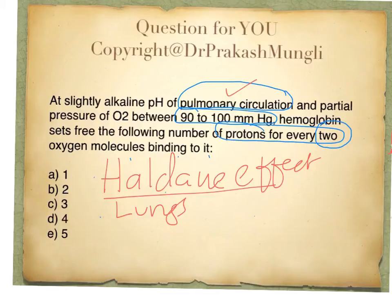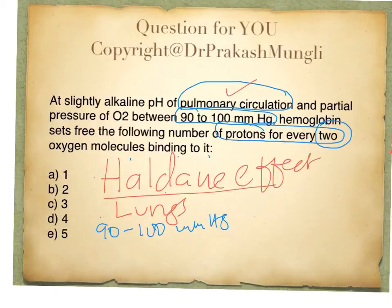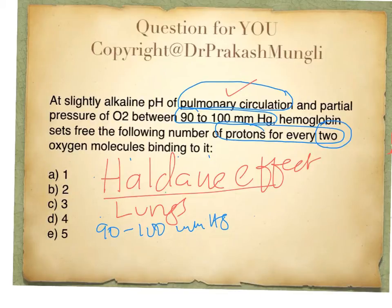In the lungs, the partial pressure of oxygen is 90 to 100 mmHg — a high partial pressure sufficient to bind oxygen to hemoglobin. Oxygen binds to hemoglobin, stabilizing the R-state, causing a conformational change that breaks the polar bridges and releases protons. For every four molecules of oxygen binding to hemoglobin, two protons are released.